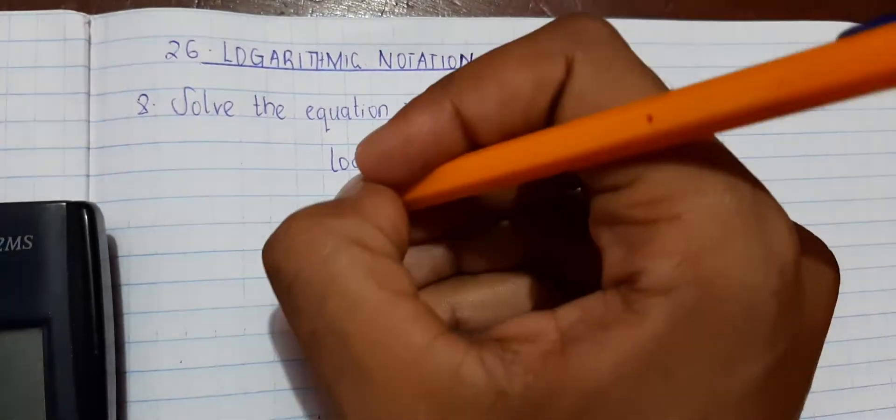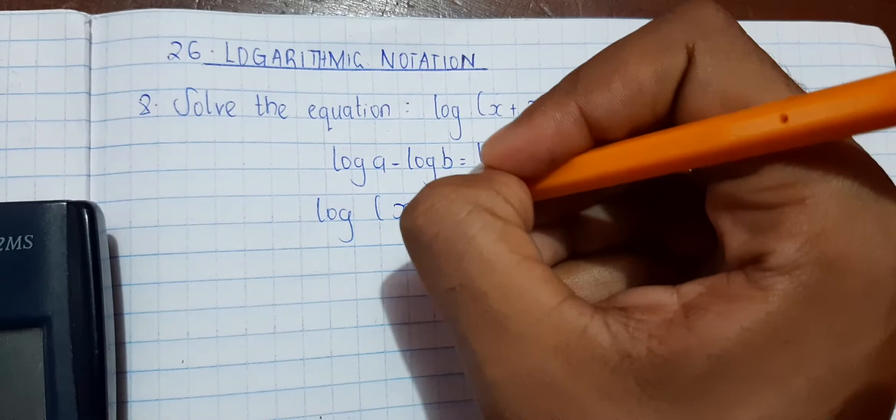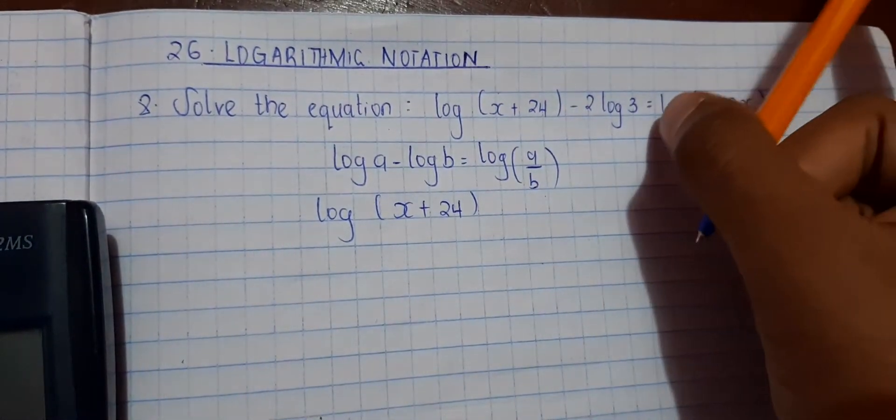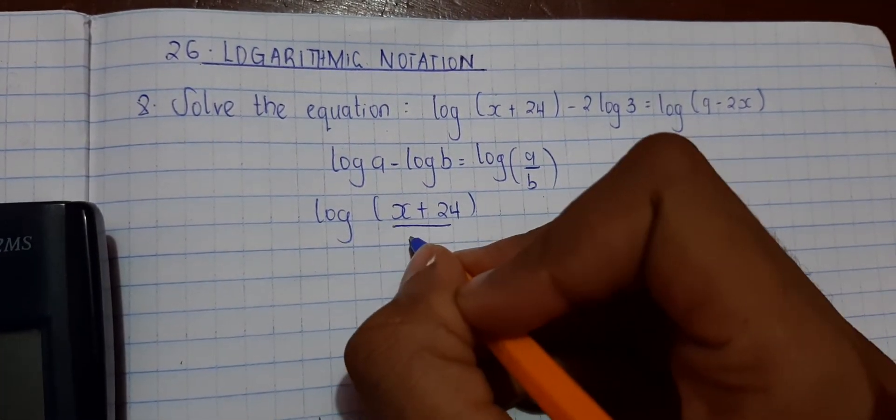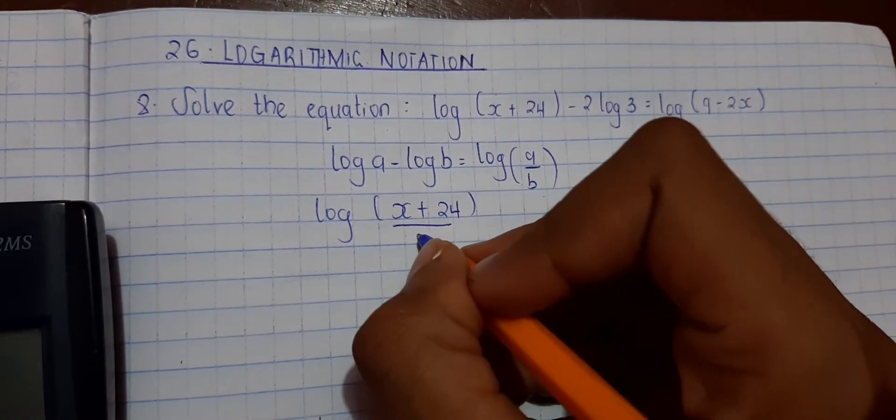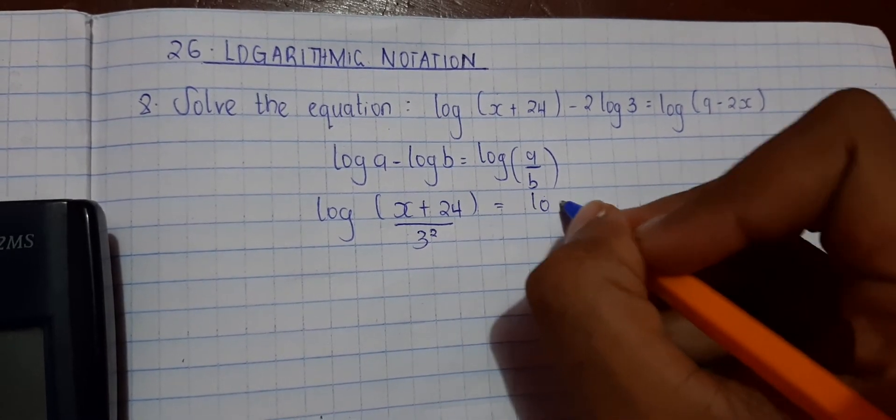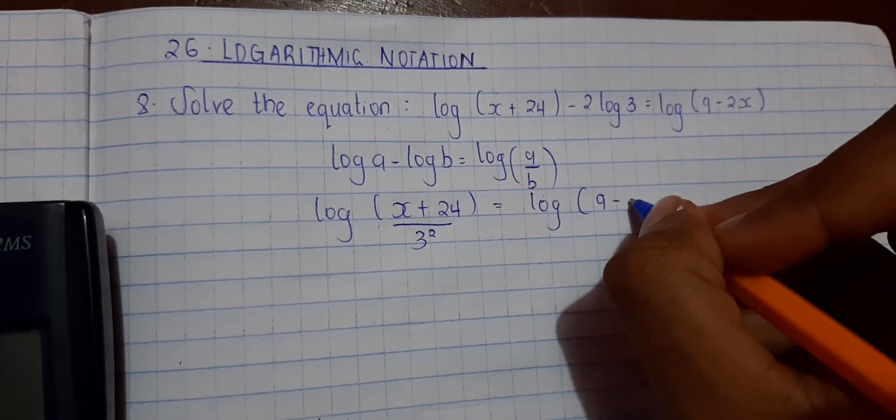So log(x plus 24) divided by... this becomes log 3 squared is equals to log(9 minus 2x).